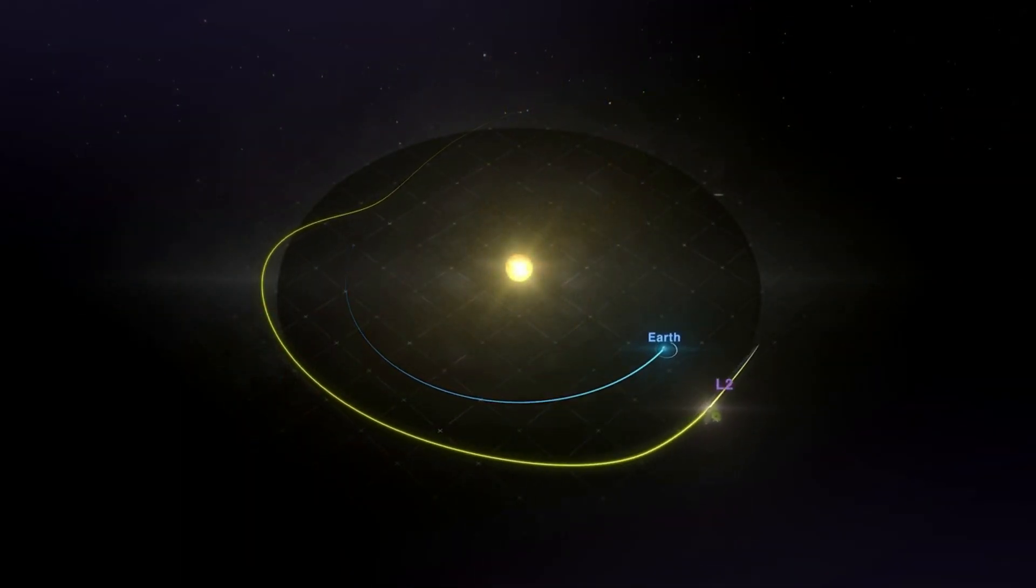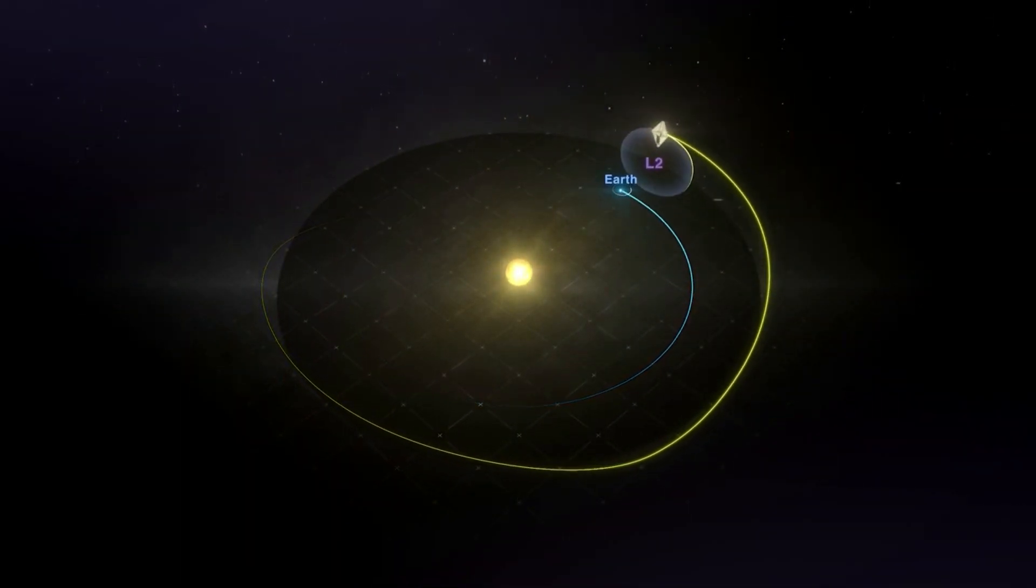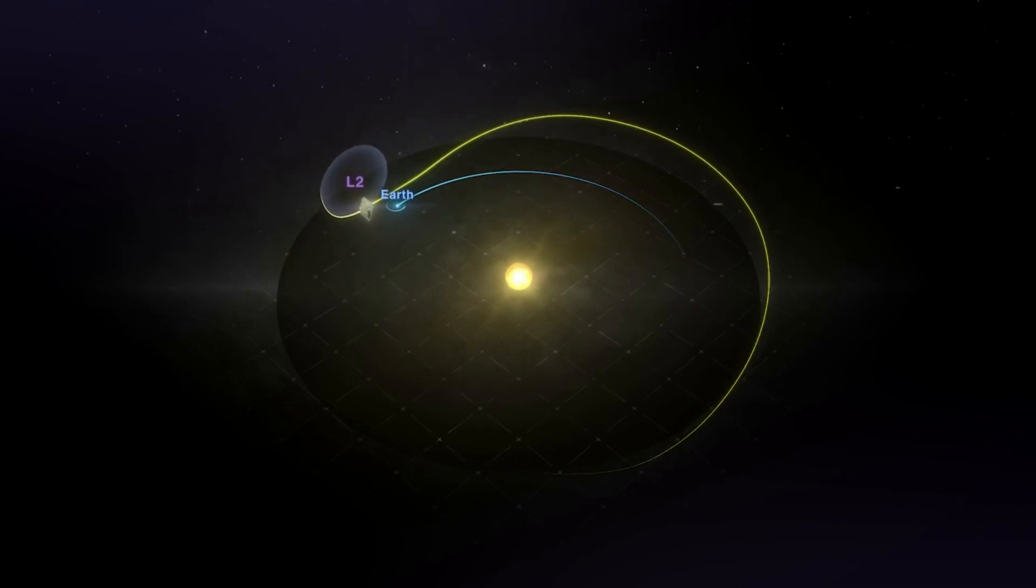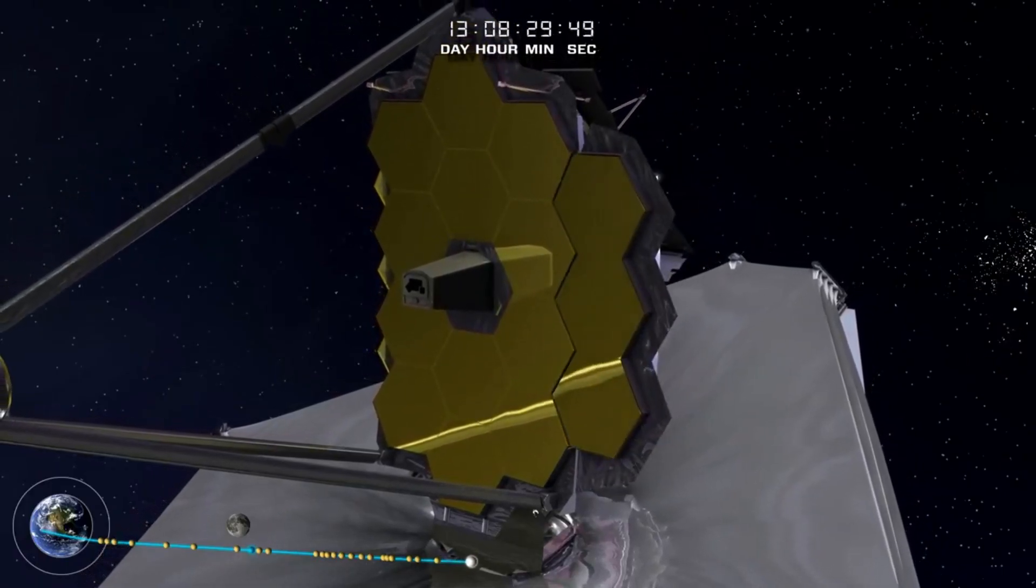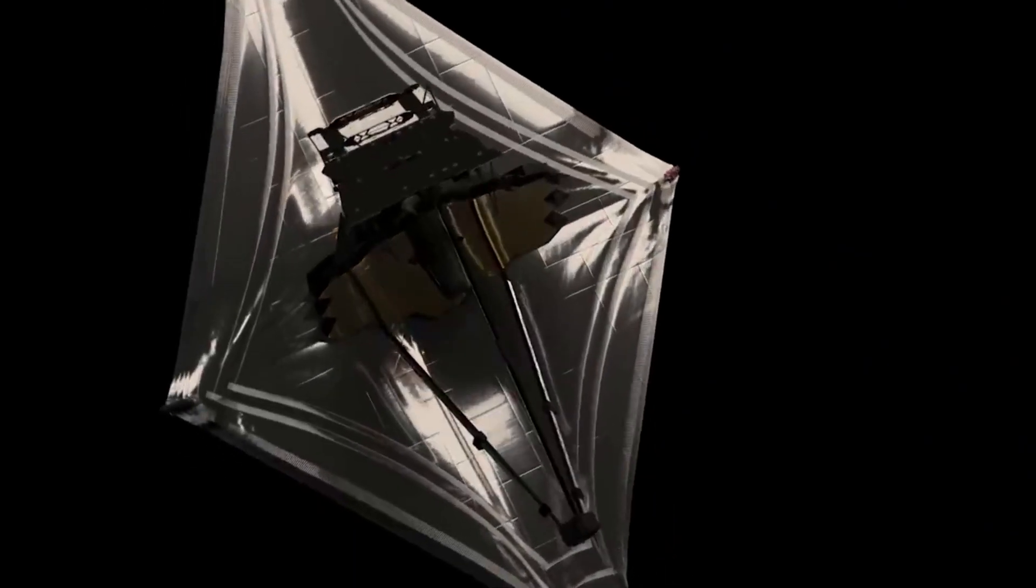A bit over a month ago the next generation space telescope reached its final destination at L2. By now it has had time to not only deploy, but work through different necessary phases such as alignment. This brings up the question of what exactly has Webb been up to since reaching its orbit.